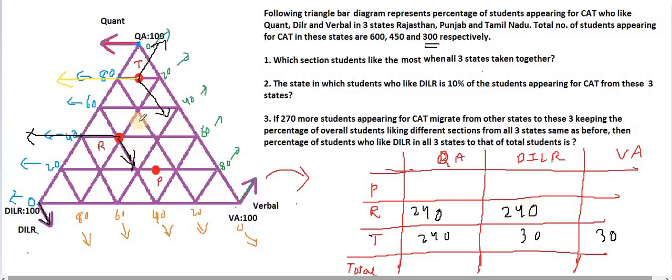Next, verbal — so like this: 0, 80, 60, 40, and here it is 20. So 20% of the students are liking verbal — that is 20% of 600, which is 120.